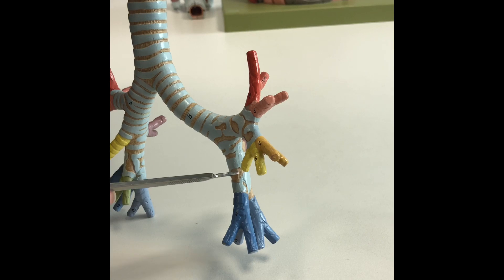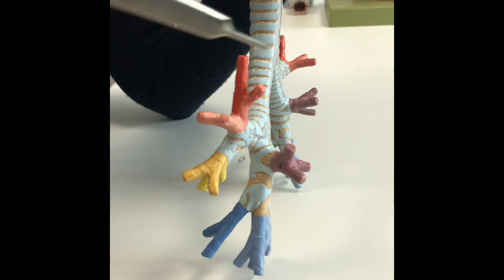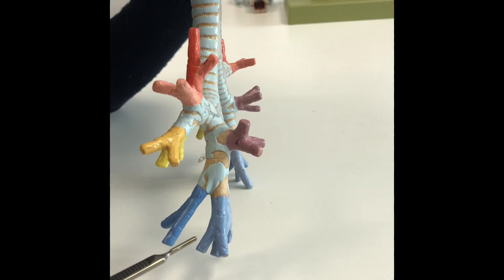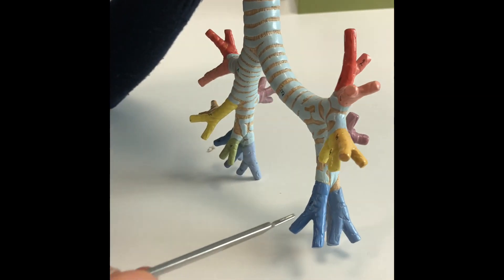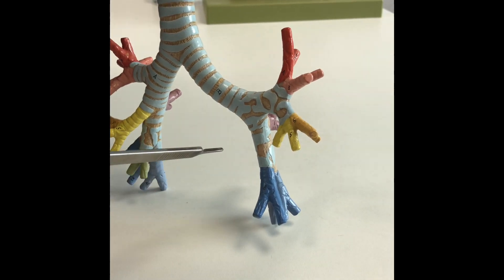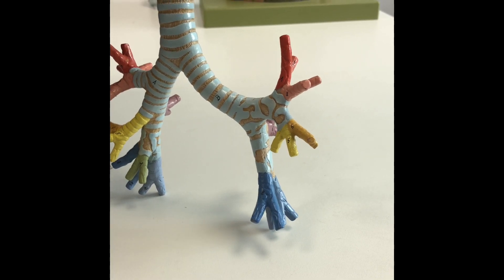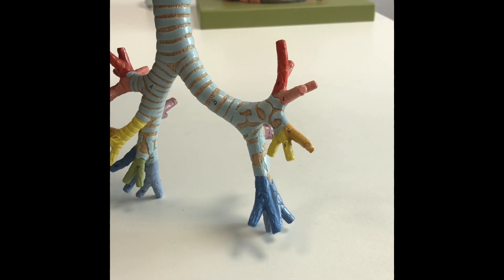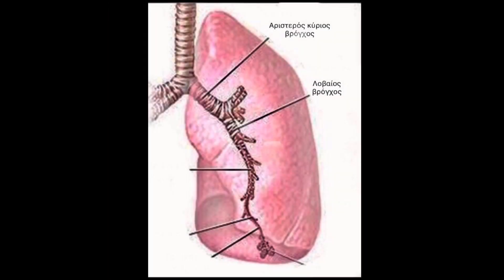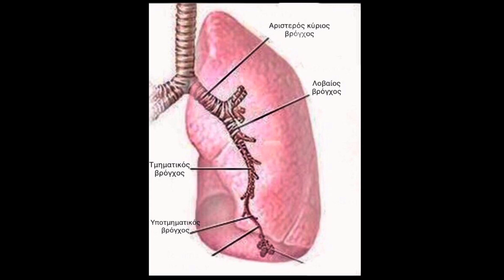The lower lobar bronchus on the left, similar to the right, gives rise to the segmental bronchi, including the anterior, posterior, and lateral basal bronchi. However, in the left lower lobe, the medial basal bronchus does not give a separate branch as it does on the right, because the corresponding segment on the left is absent — a characteristic explained by pressure from the heart.